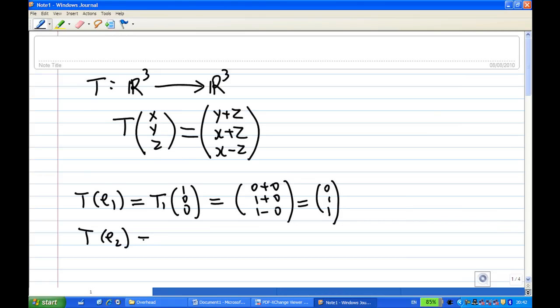T(e₂) is equal to the image under T of (0, 1, 0), where the second column of the identity matrix is (0, 1, 0). That means y is 1, x is 0, z is 0. So we get 1 plus 0, 0 plus 0, 0 minus 0, and this will give me (1, 0, 0).